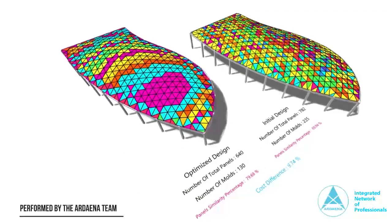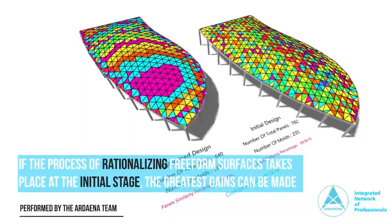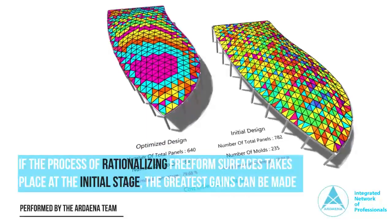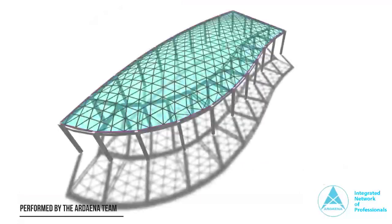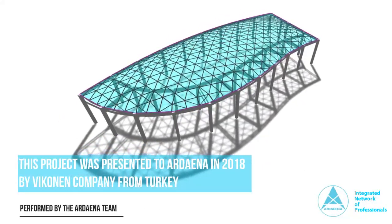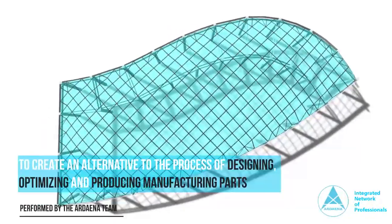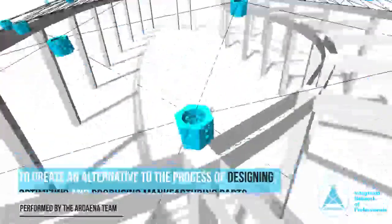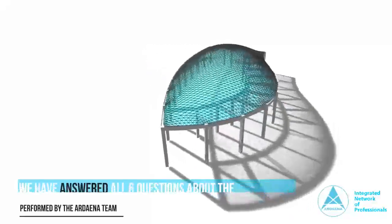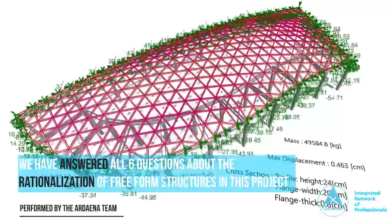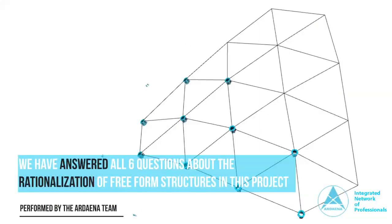The process of rationalizing freeform surfaces normally takes place at the end of the design process, while if it is considered at the initial stage, the greatest gains can be made. This project was presented to Ardina in 2018 by Bakanen Company from Turkey to create an alternative to the process of designing, optimizing, and producing manufacturing parts in 3D format ready for starting the CNC process. We have answered all six questions about the rationalization of freeform structures in this project, which we are going to share here, so stay with us.